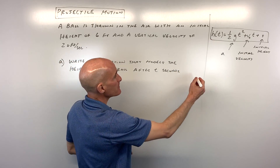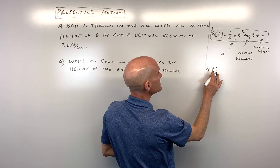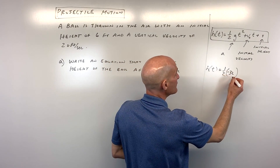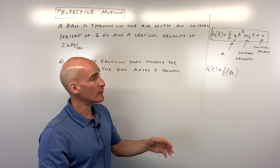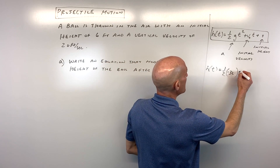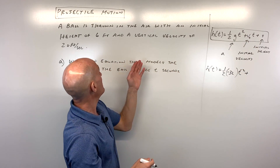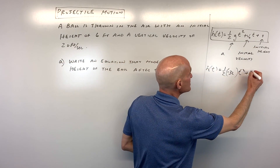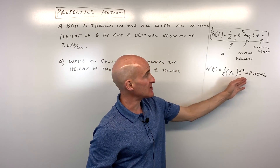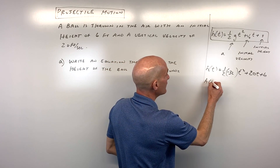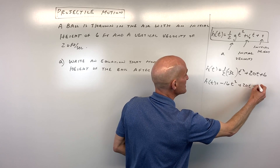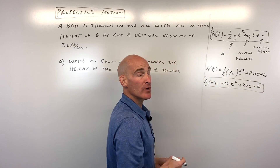Using this formula, we have the height as a function of time equals one half times g — the acceleration due to gravity. If we're working with feet, that's negative thirty-two feet per second squared; if working with meters, it would be negative nine point eight meters per second squared. So we get one half times negative thirty-two times t squared, plus v sub zero — the initial velocity of twenty feet per second — times t, plus the initial height of six feet. Simplifying, one half times negative thirty-two is negative sixteen, giving us h(t) = -16t² + 20t + 6.